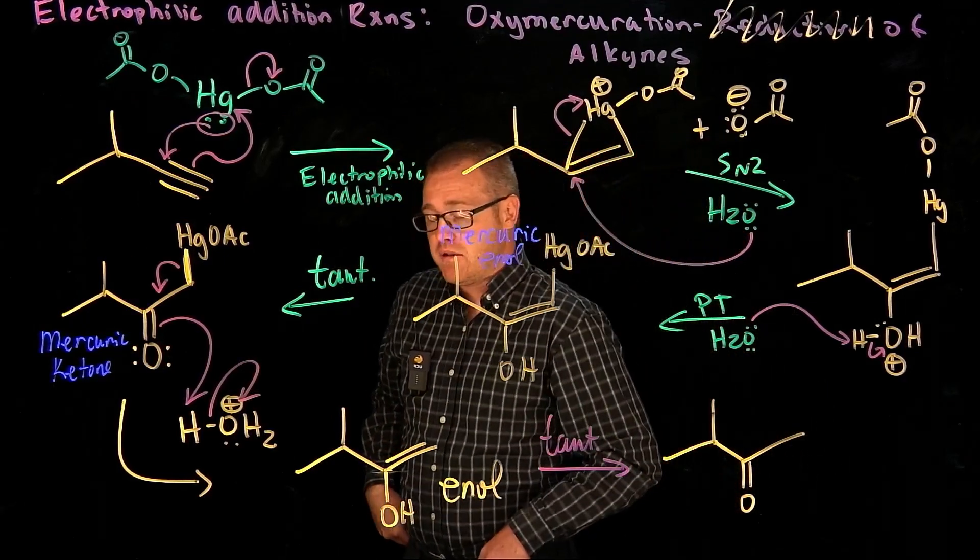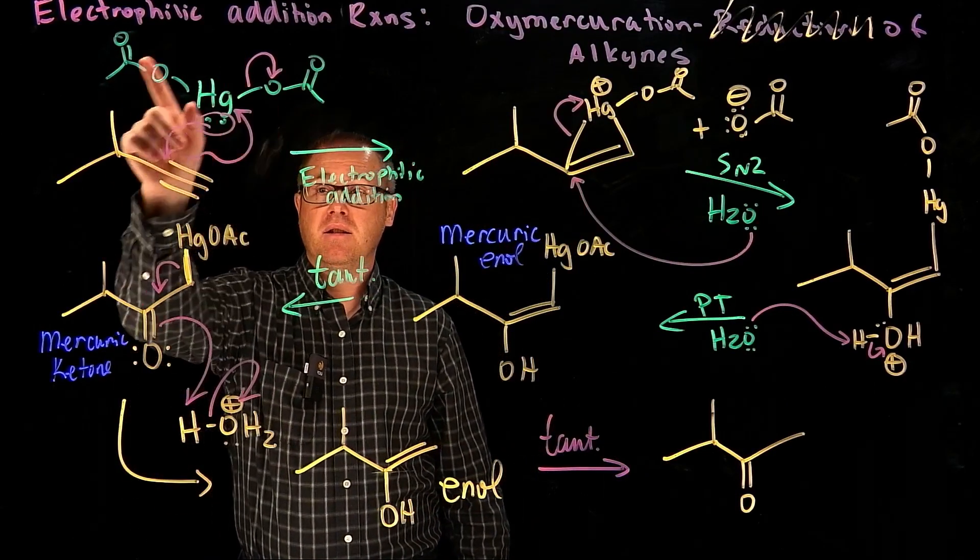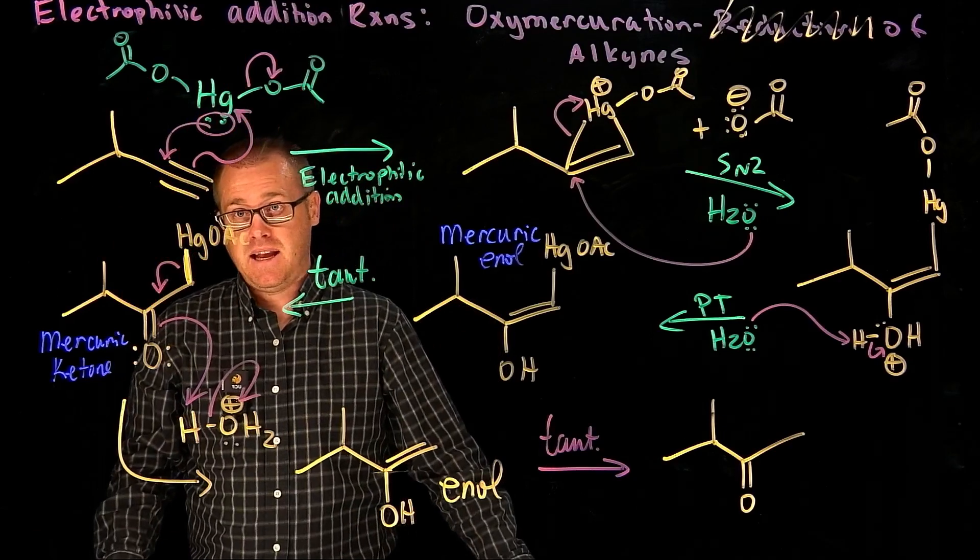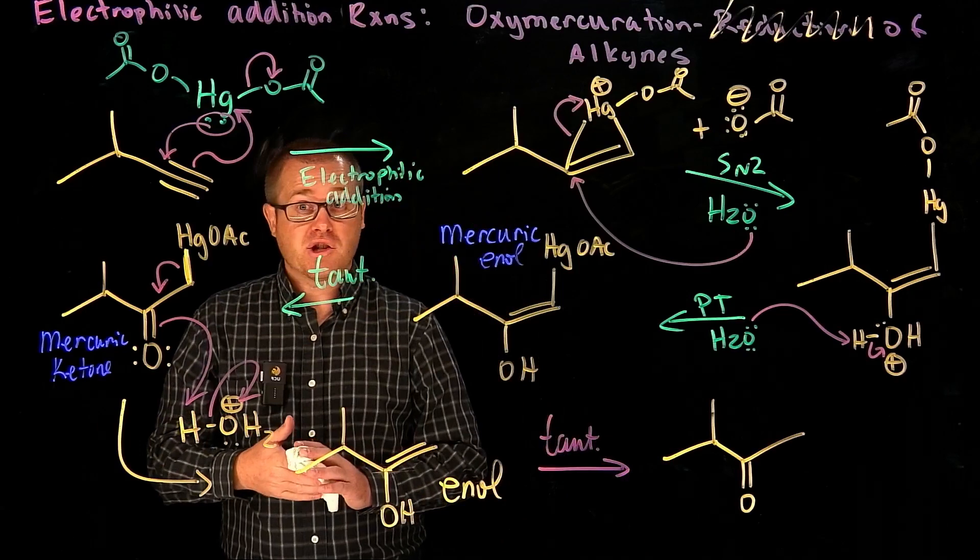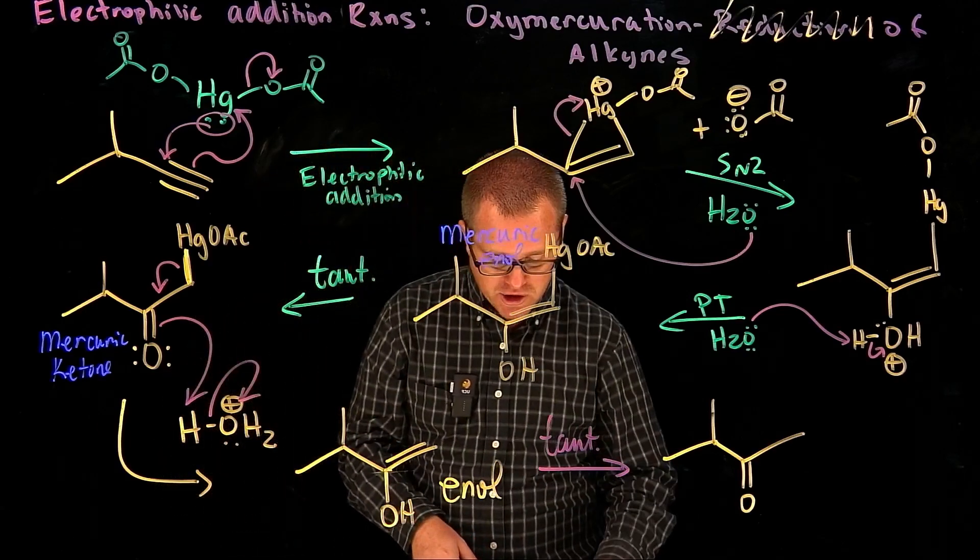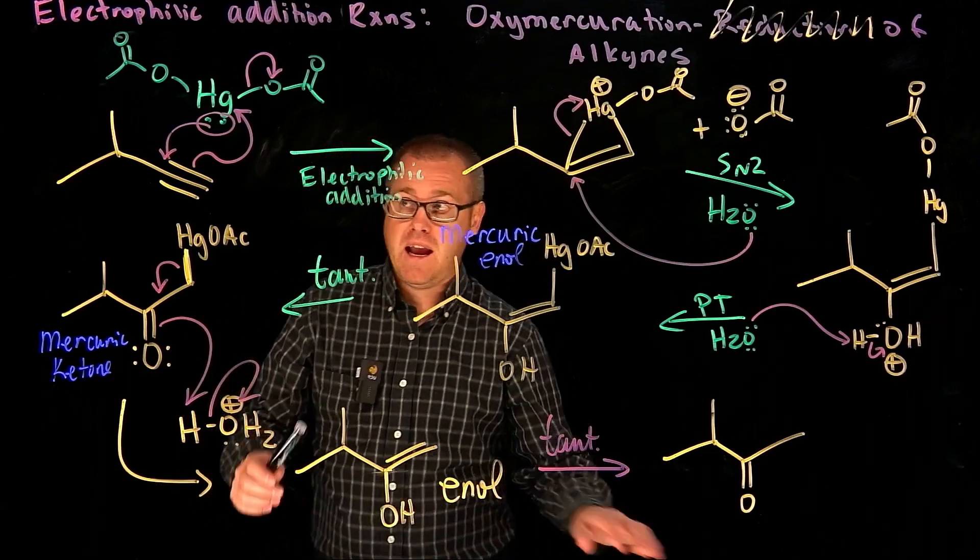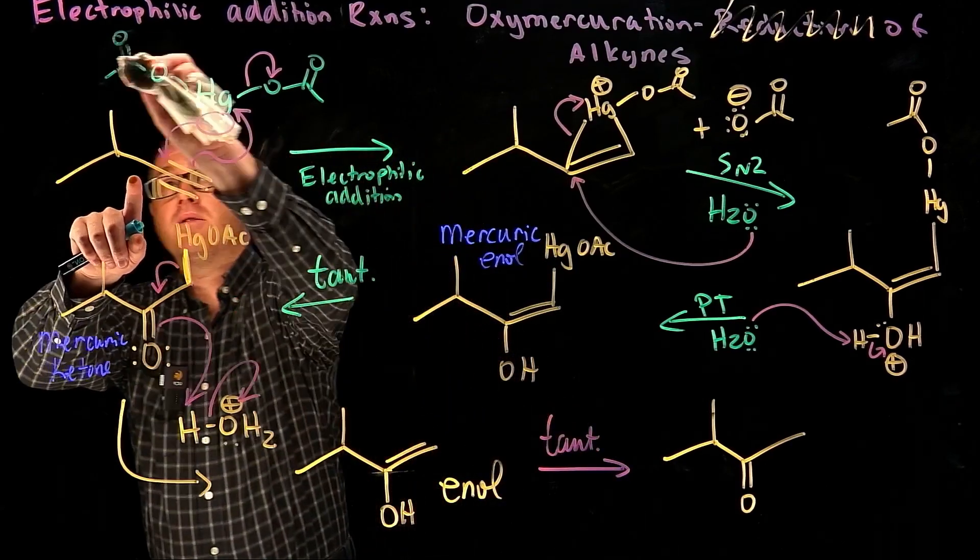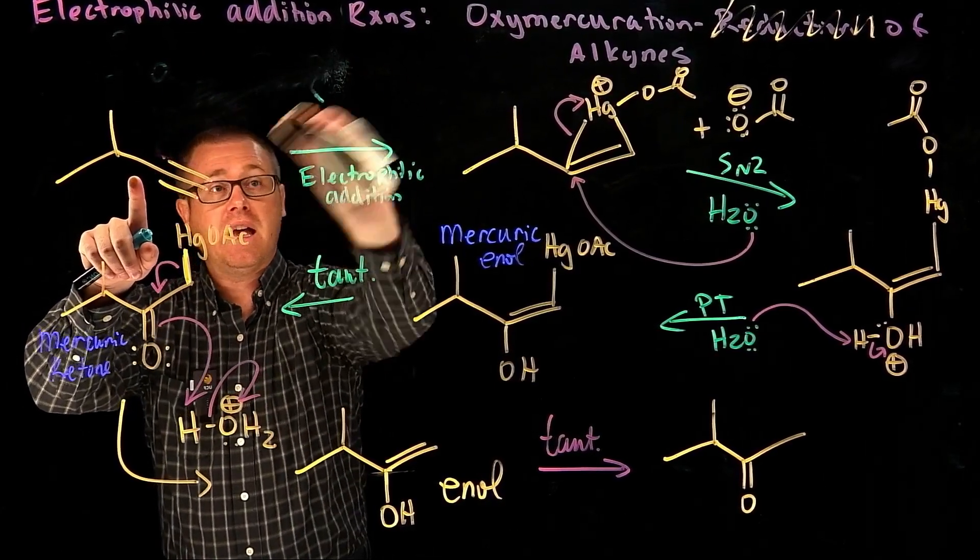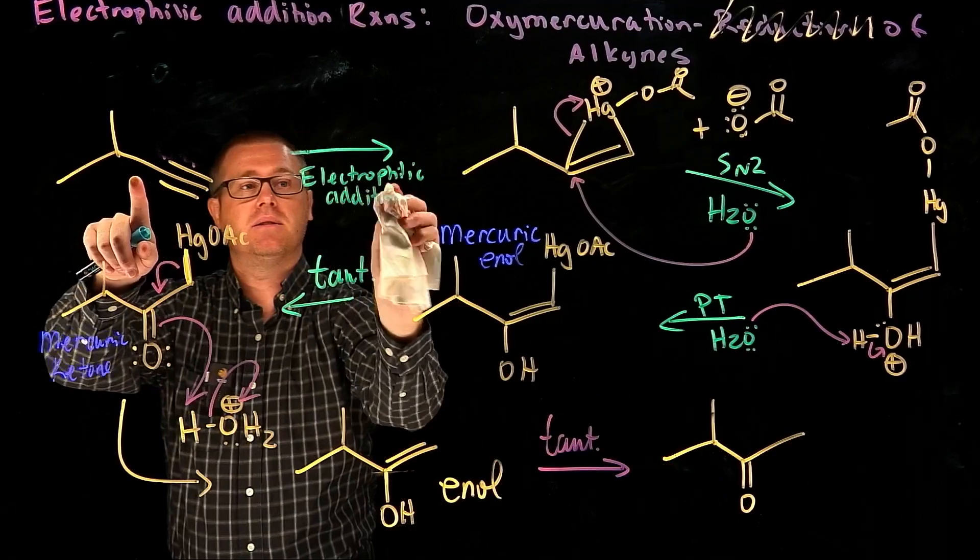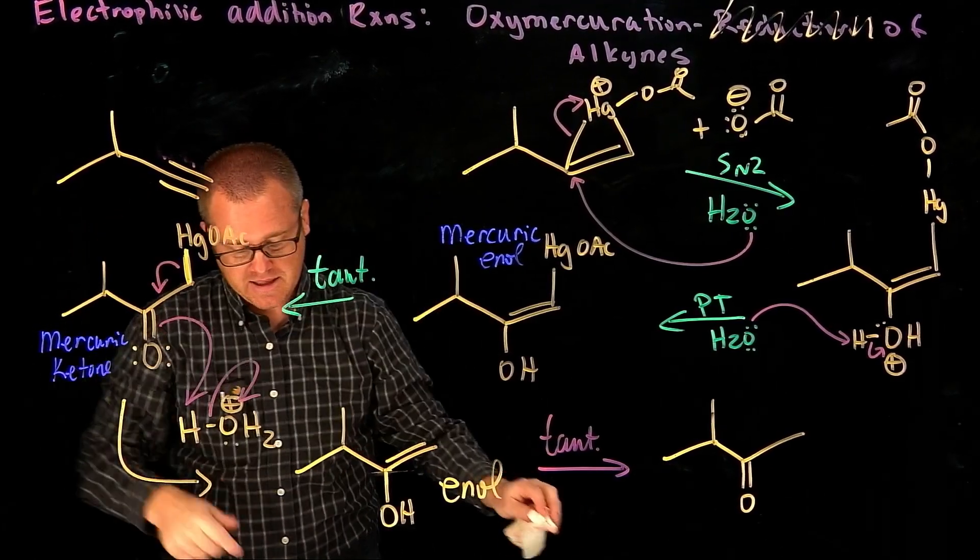Now another thing to remember is that this mercury source right here, that's mercury(II) acetate. But you can do this reaction with other sources of mercury, and I want to show you some common ones that you should be aware of.